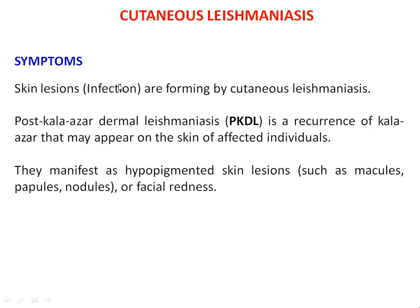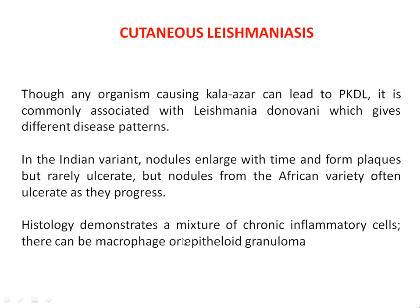Symptoms involve skin lesions — that is, skin infection, patches of the skin — formed by Cutaneous Leishmaniasis. The post-kala-azar dermal leishmaniasis is a recurrence of kala-azar that may appear in the skin of affected individuals. They are characterized by hypopigmentation — skin lesions such as macules, patches of the skin, papules, and nodules. Sometimes these patches occur on the face, causing facial redness. Though any organism causing kala-azar can lead to post-kala-azar dermal leishmaniasis, it is commonly associated with Leishmania donovani, which gives different disease patterns.